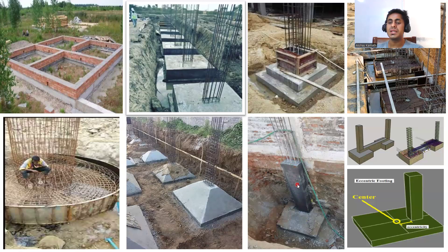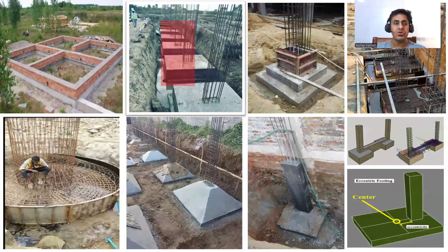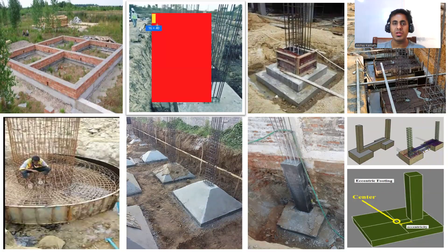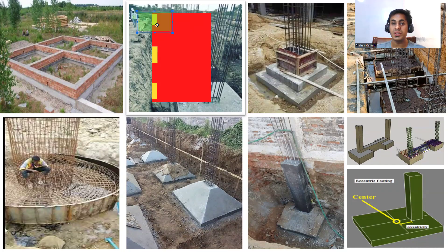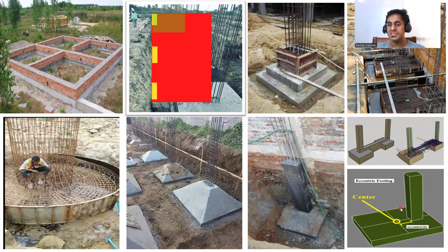The next type is eccentric footing, sometimes also called a strap footing. This occurs when you're doing construction in the boundary area. If this is your plot area and you're putting all your columns at the boundaries, when you design the footing it will go outside your boundary into your neighbor's plot. You can't do that, so you have to take the footing inside. The moment you take it inside it becomes eccentric — your column CG and the footing CG no longer match, creating an eccentricity. Because of this eccentricity, P × e, a moment is created.